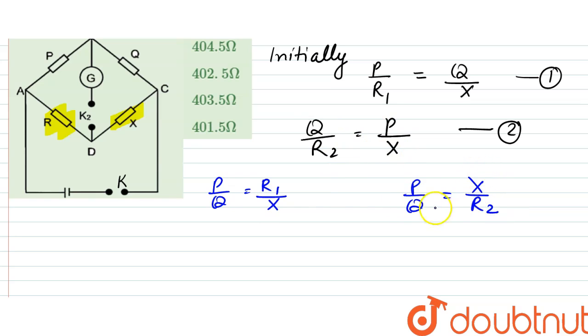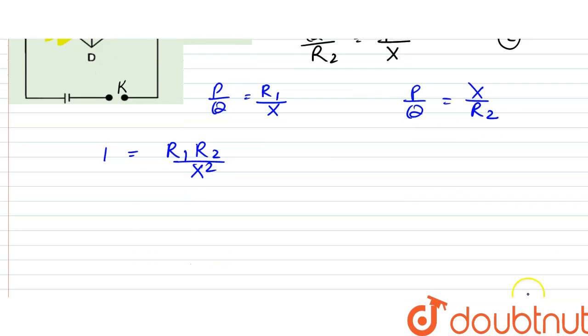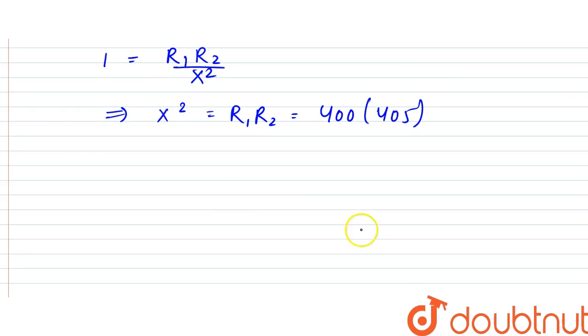So from here when we divide this by this, what we get is 1 to be equal to R1 into R2 by X square. This implies that X square should be equal to R1 into R2 which is equal to 400 into 405.